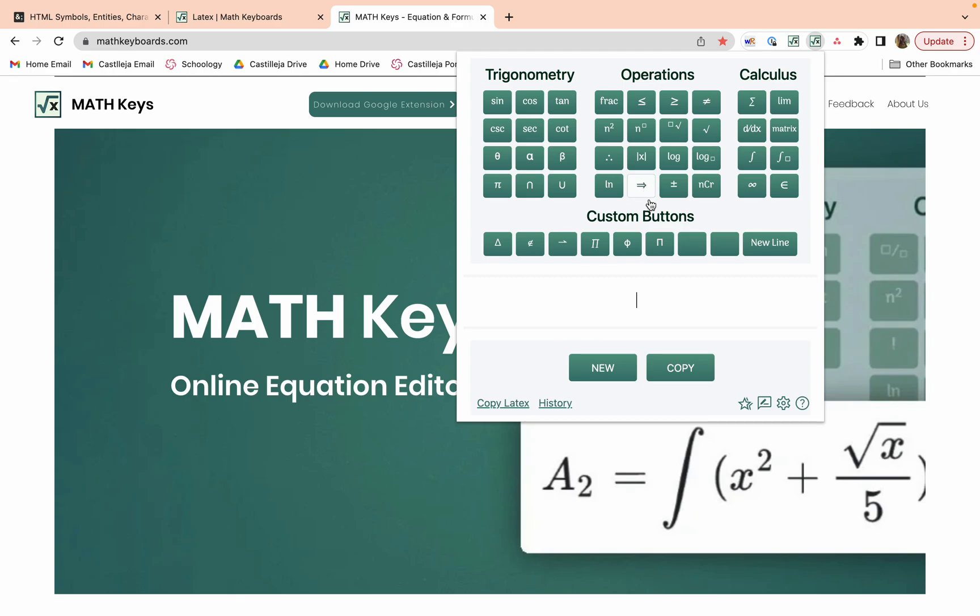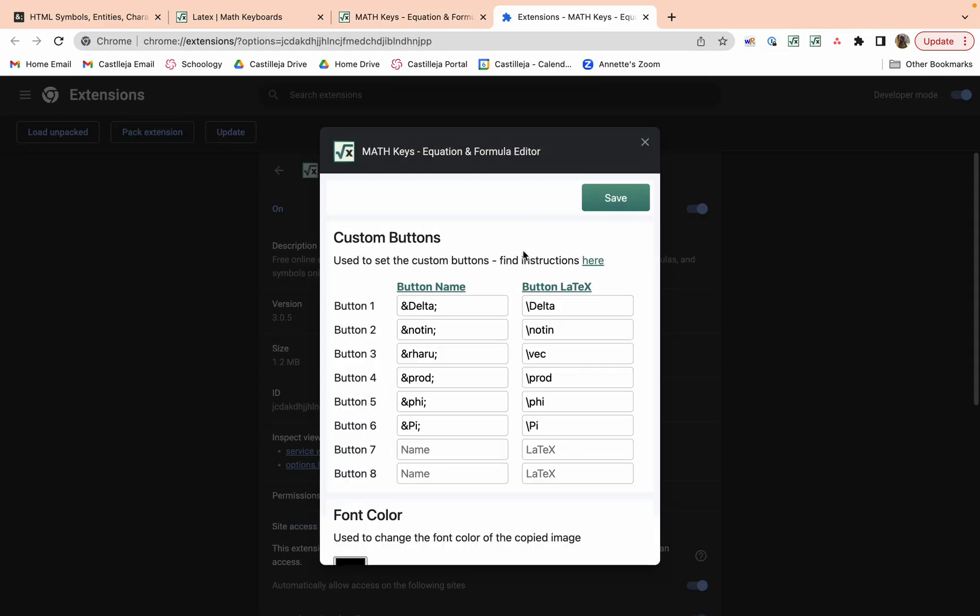Say you use this a lot and you want to make it a custom button. What you do is press settings or you can press on any empty button. You can go in and see that I already have some custom made buttons.